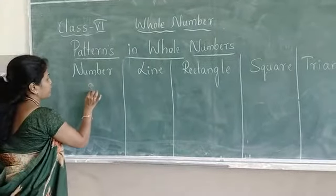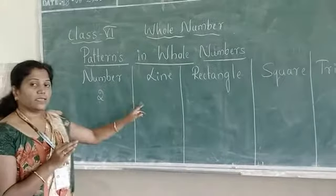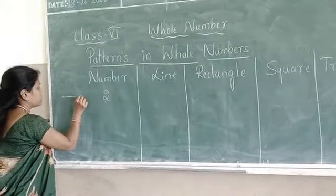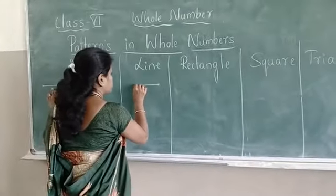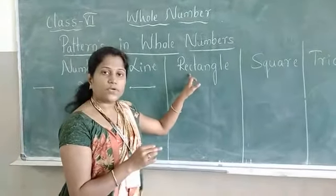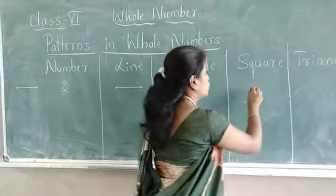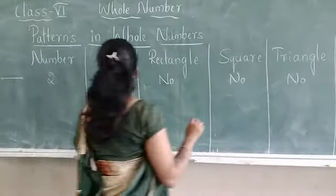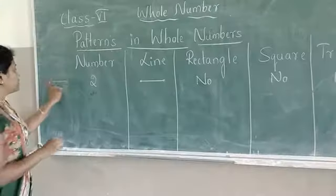Suppose I will take 1 whole number — 2 is the whole number. Where to make the line? Elementary shape. You have to take 2 dots and make a line: 1, 2. Can you make a rectangle? No. A square? No. A triangle? No. How many dots are there? Only 2. So you have to make only a line.